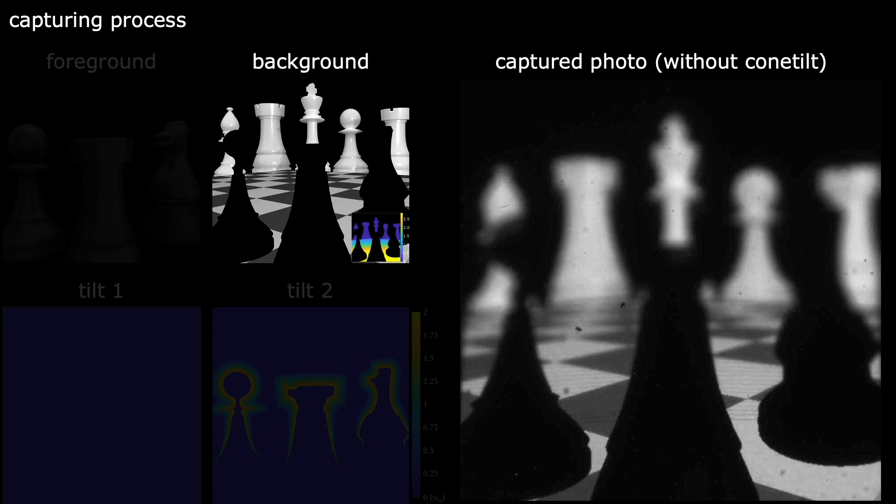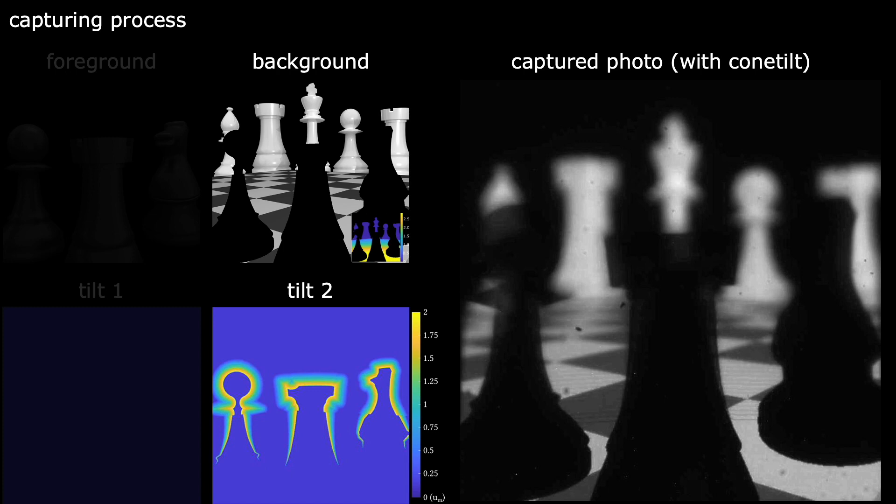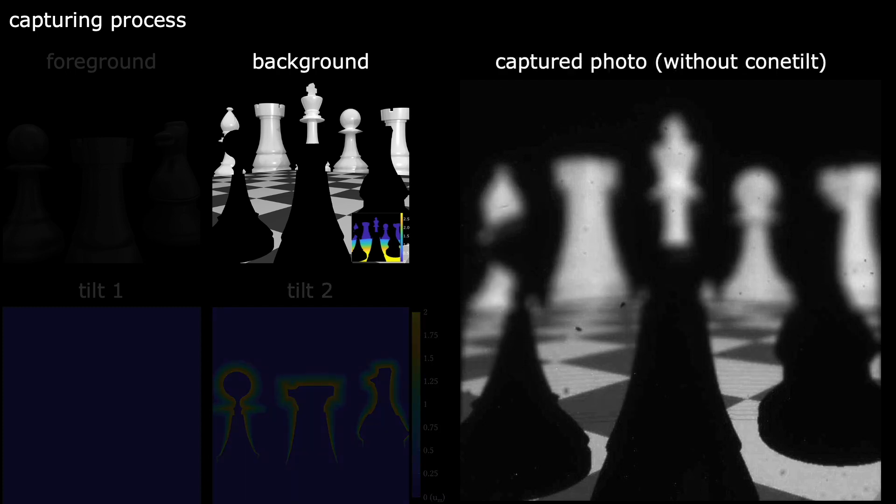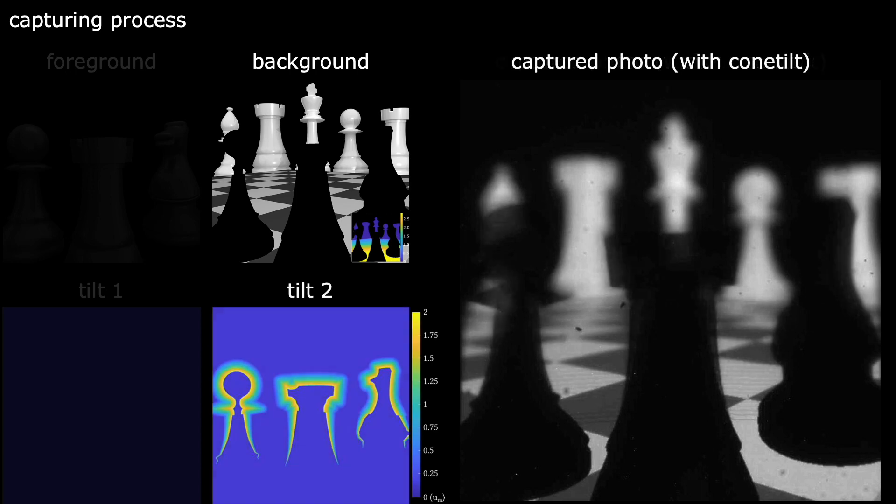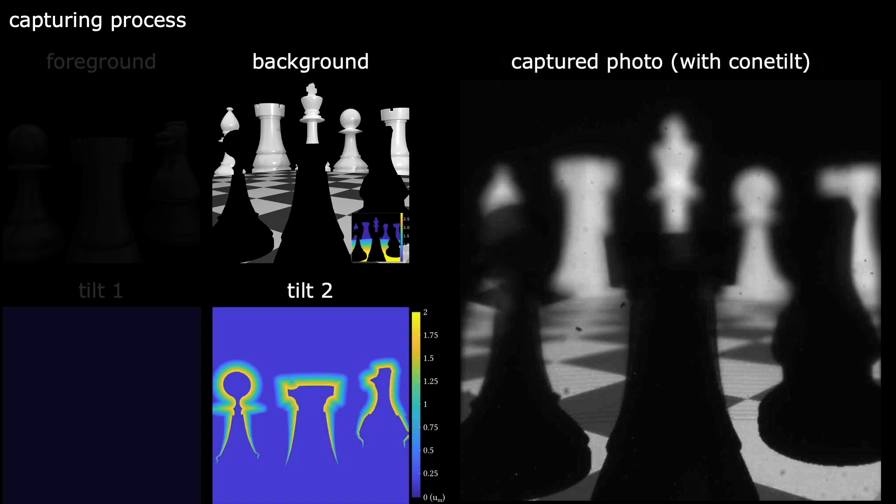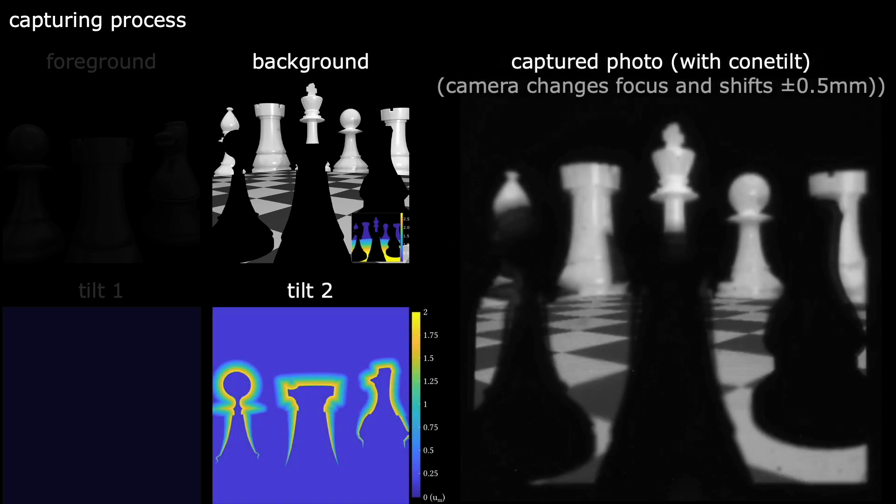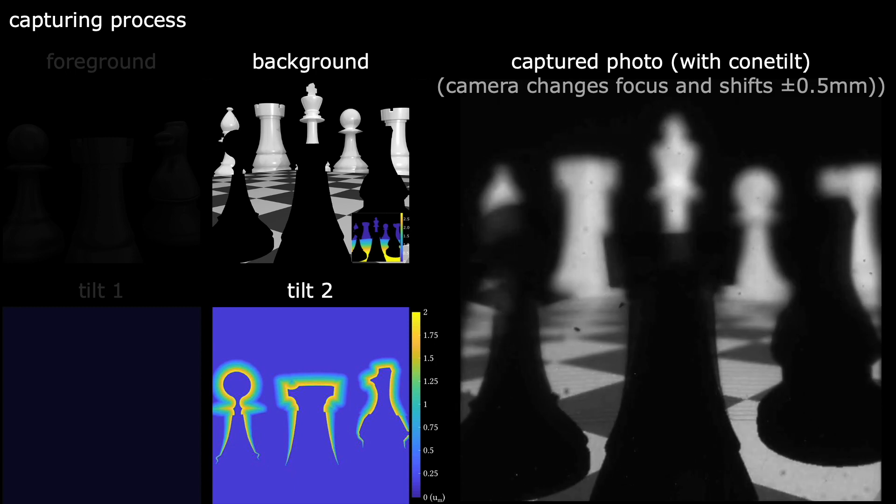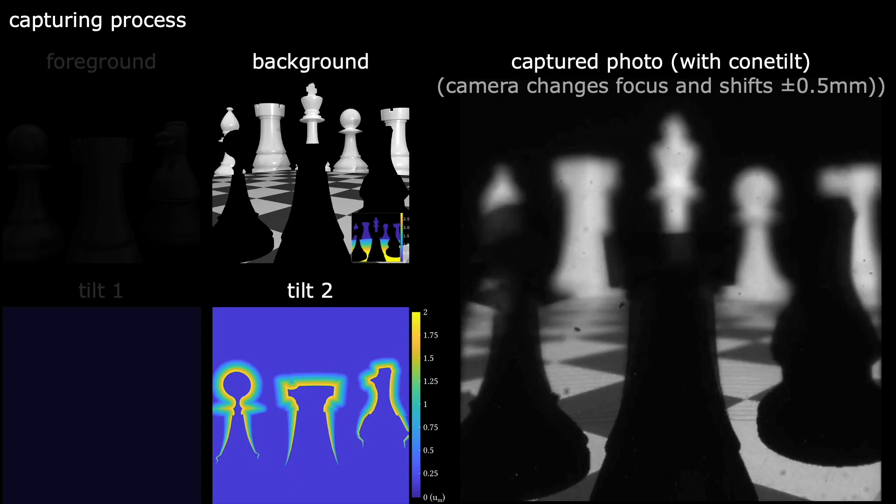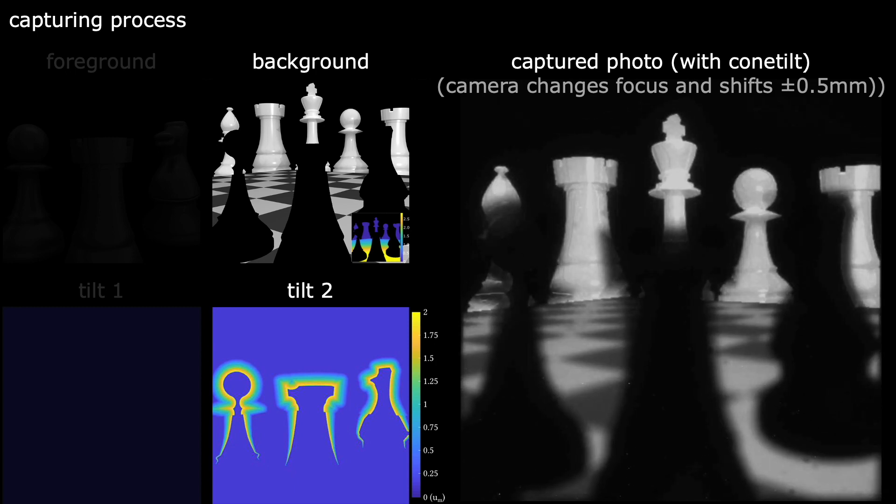To see the effect of ConeTilt, we first show the captured image before ConeTilt. Here is the captured image after ConeTilt. For comparison, let me go back and forth. As can be seen, by implementing ConeTilt, we effectively prevent the background pixels from emitting light towards the chess pieces in the foreground.